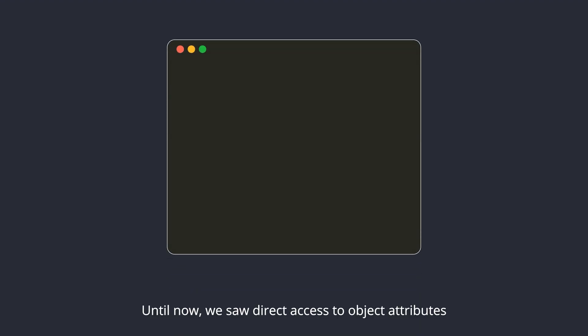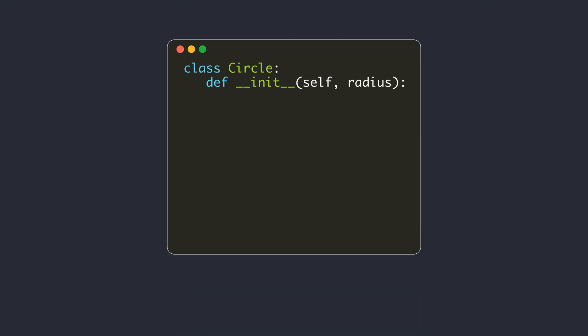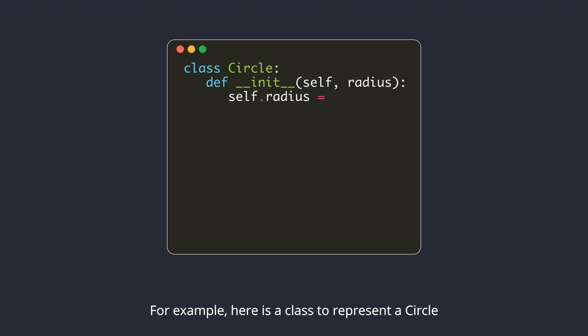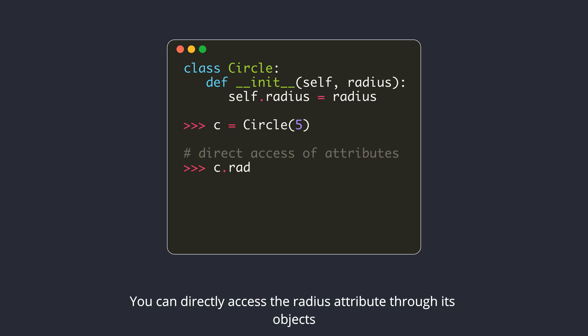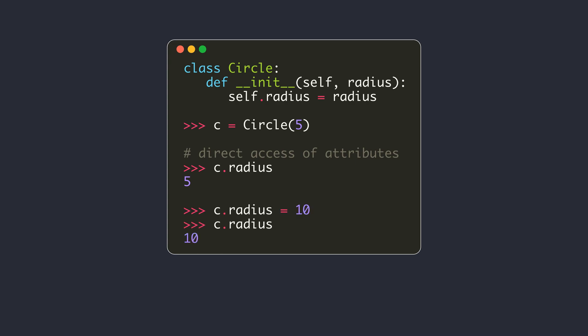Until now, we saw direct access to object attributes. For example, here is a class to represent a circle. You can directly access the radius attribute through its objects. You can even set a new value on the radius attribute directly.